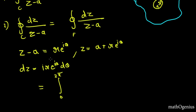Now dz changes to iota r e raised to iota theta d theta divided by z minus a, which is r e raised to iota theta. Now these two get cancelled and we get iota 0 to 2 pi d theta.